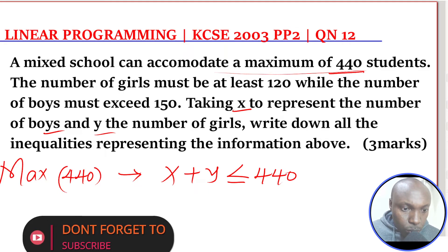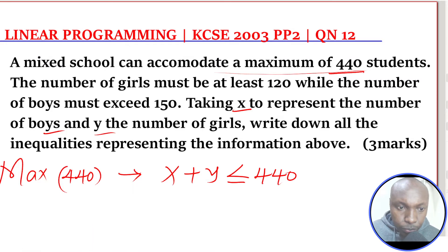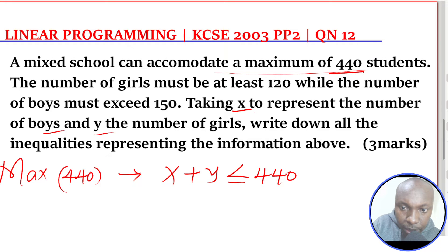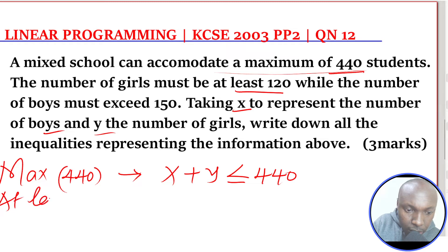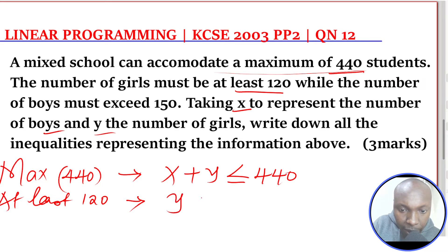Now let's go to the second one. The number of girls must be at least 120. What do we mean by at least 120? It means 120 or more — that is, greater than or equal to 120. So at least 120 girls means Y should be greater than or equal to 120.